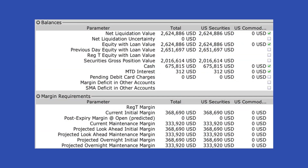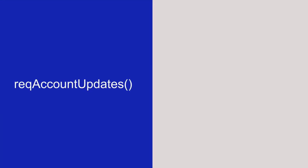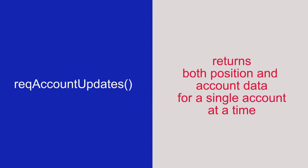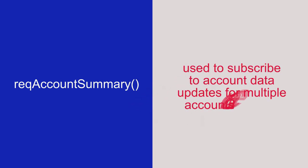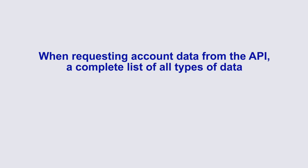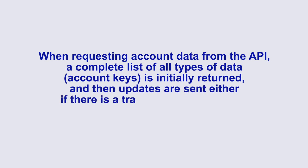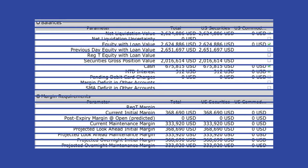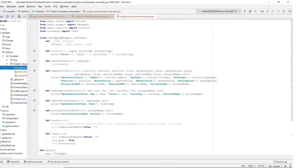Account information — such as net liquidity, cash balances in different currencies, and required margin amounts — is returned after calling several different functions. The first, REQAccountUpdates, returns information about both positions and account data in a single account at a time, or aggregated data from all sub-accounts in financial advisor accounts, but can't subscribe to multiple sub-accounts simultaneously. The second function, REQAccountSummary, is more commonly used in different account structures to subscribe to account updates from multiple accounts at once. And finally, REQAccountSummaryMulti is used to subscribe to account updates from single sub-accounts at a time when there are more than 50 sub-accounts, and is also used with portfolio models.